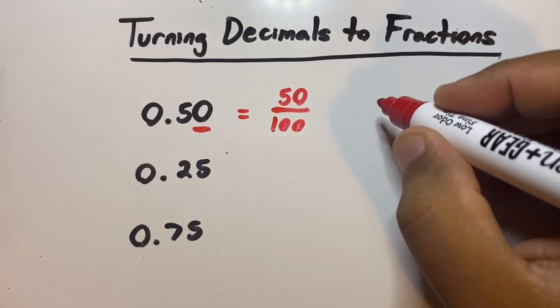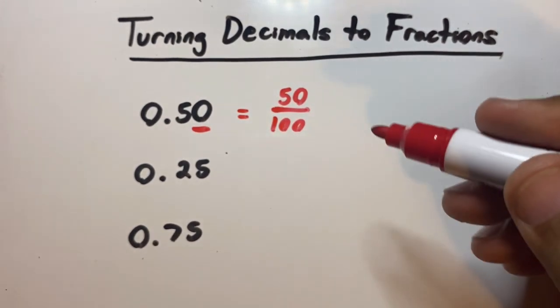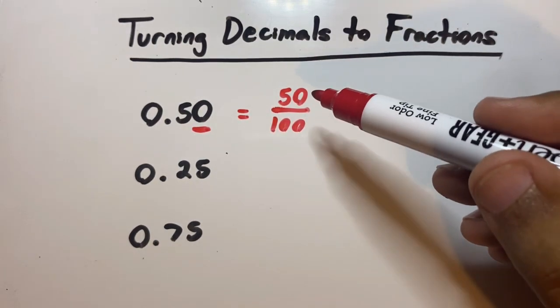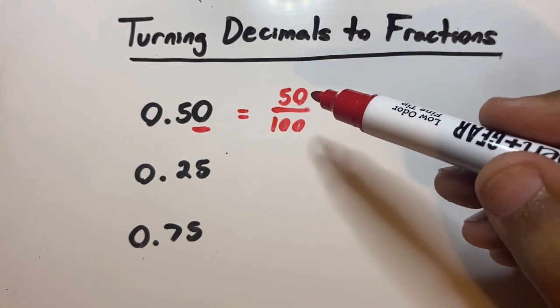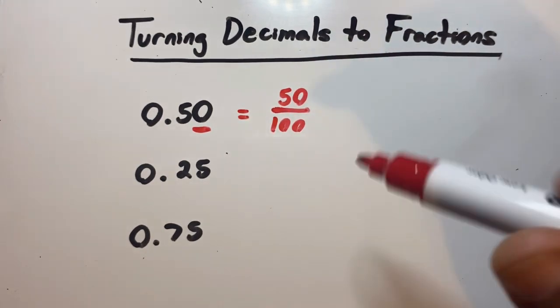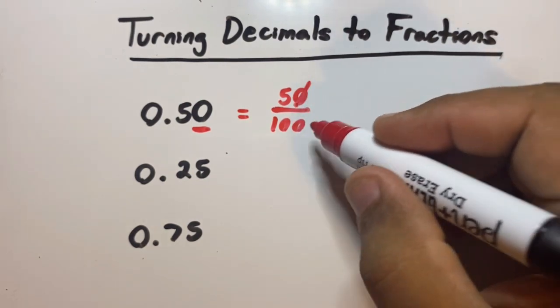Now this can be simplified. There's two ways to do this. Either A, you can divide both these numbers by 50 because 50 fits inside 50 and 50 fits inside 100. Or B, you can cross out the zeros. Because the numerator only has one zero, you're only going to cross out one zero from the denominator. So now your equation should look like this: 5 over 10. You simplified it.